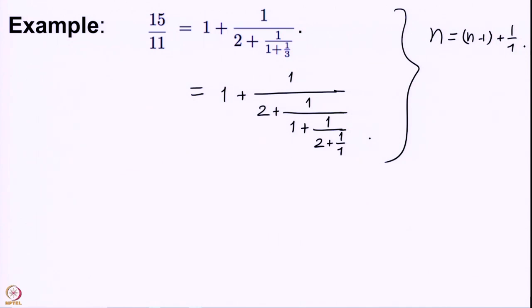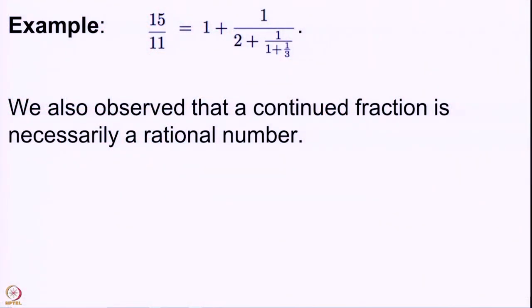Before saying all these things we should also give a way to construct a continued fraction representation for a rational number. We also noticed that if you have a continued fraction then it is necessarily a rational number. The continued fraction is obtained starting with an integer a_0, then you write a_0 plus 1 upon a_1 plus 1 upon a_2, and so on, stopping at a_n — only finite data. This was observed in the last lecture.